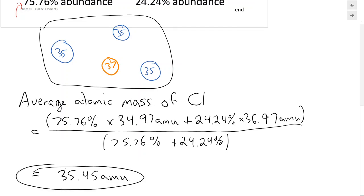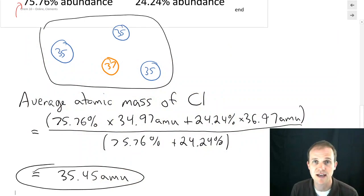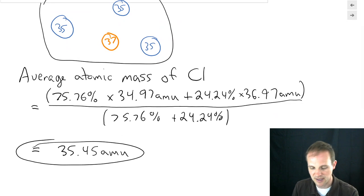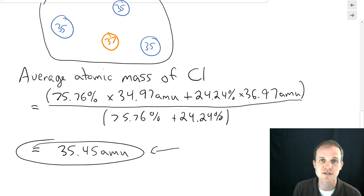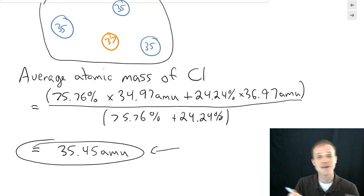If you do that, you should get 35.45 amu as the average atomic mass of chlorine. And if you go over to the periodic table and look for chlorine, the average atomic mass listed there is 35.45 amu. When we're talking about collections of billions of chlorine atoms, we're going to use this as the mass of a chlorine atom. There's not a single chlorine atom in the universe that weighs 35.45 amu, but if I've got a pile of chlorine, I can assume each one of them on average weighs 35.45.